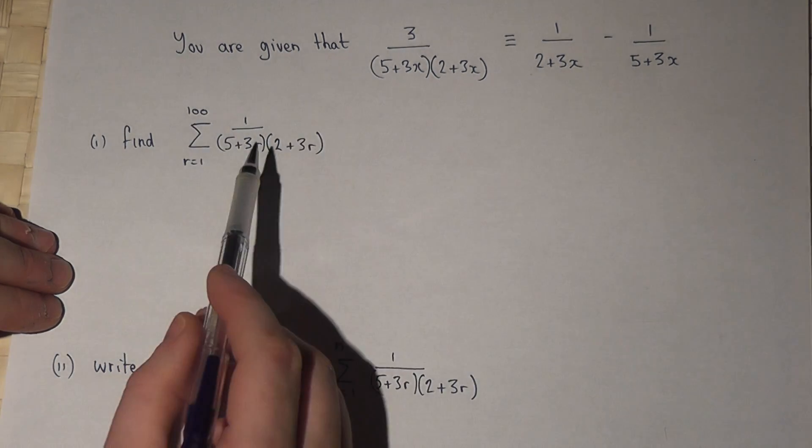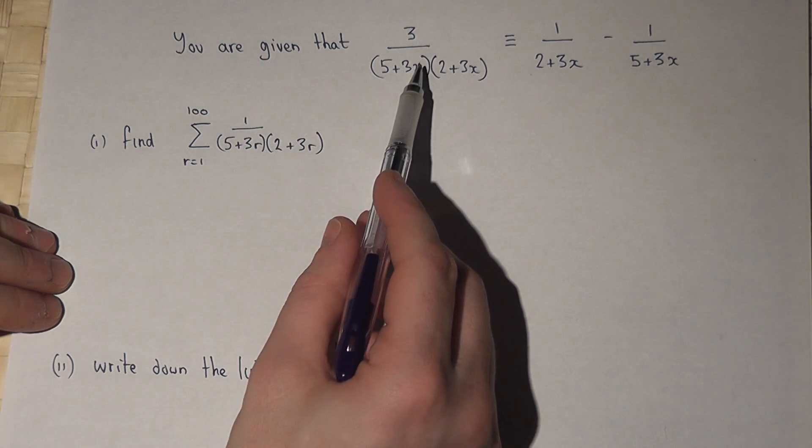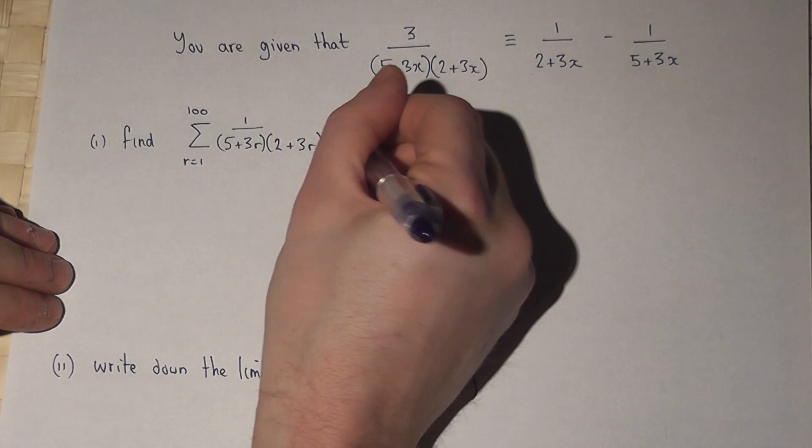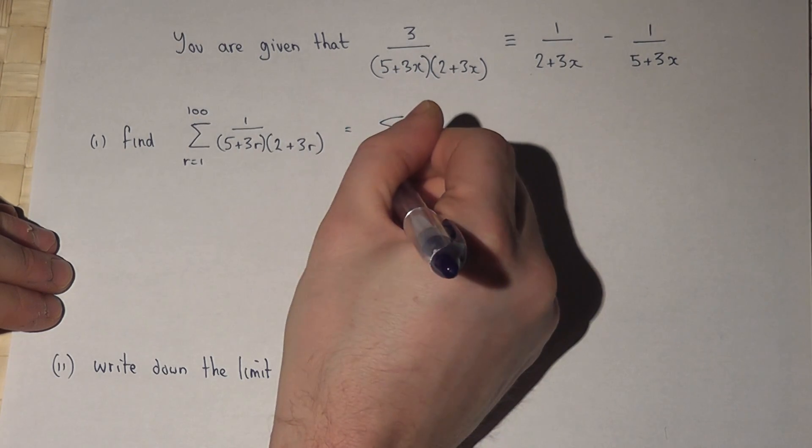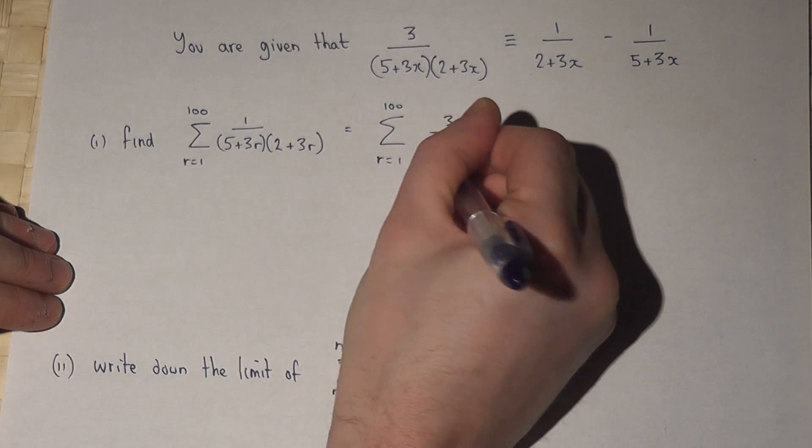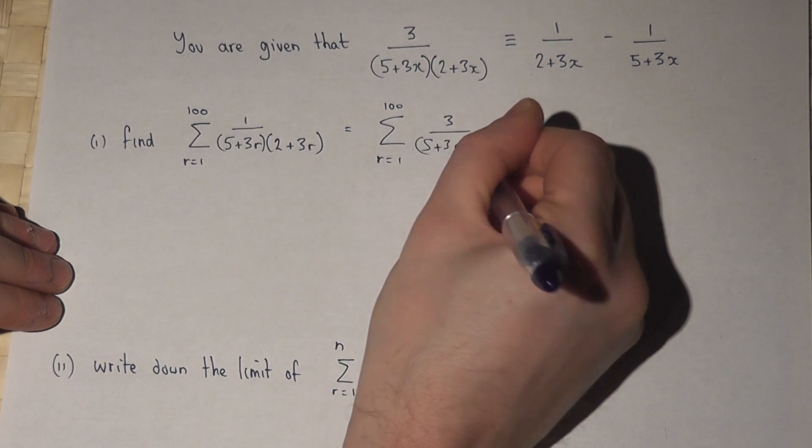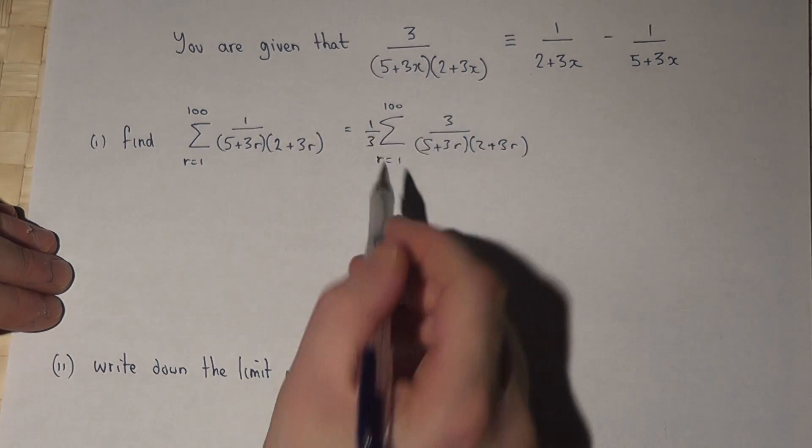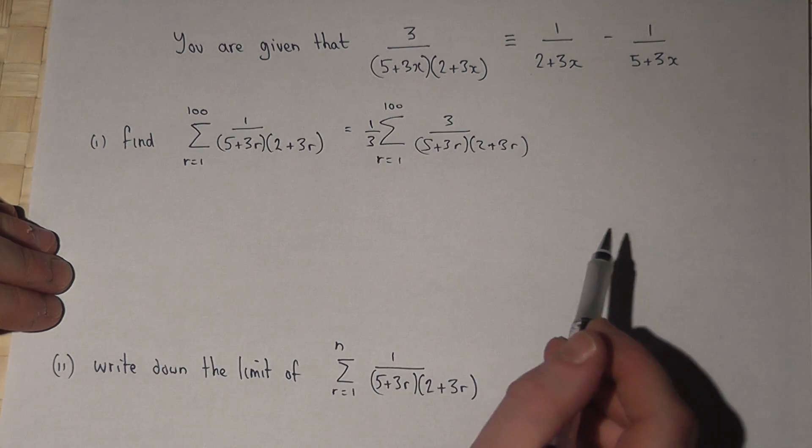The first step is to compare this to the given result. There's a 1 there rather than a 3. So step 1 is to factor out one third. If I put this as 3 over 5 plus 3r times 2 plus 3r, and put a third outside, then a third of 3 is 1. So these are the same.